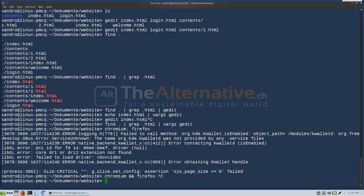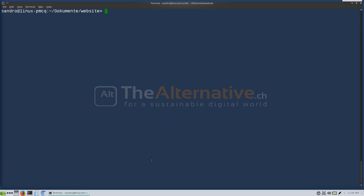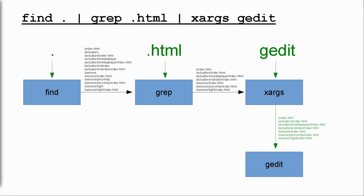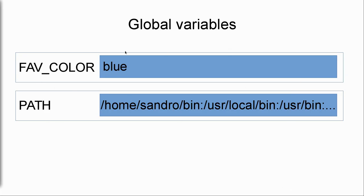Now let's have a look at environment variables. Environment variables can be seen as containers for text — so-called strings stored in the system. Each variable has a name and a string which is the text it contains. Using the name of the variable, its string can be set and retrieved. There's a container with a name — for example 'FAVORITE_COLOR' — and a content, which could be 'blue'. We want to capitalize global variable names so that when you see a dollar sign in a script, you immediately know it's a variable.